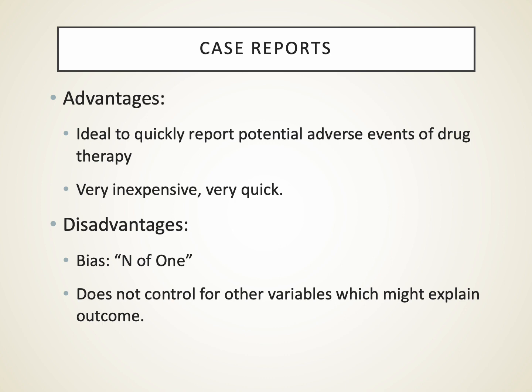One of the weakest kinds of publications are case reports. They play an important role, but basically a clinician reports on something unusual they observe. They're very quick and inexpensive, but very biased — you can't really control for whether the outcome you're seeing is related to any intervention. There's nothing to control for, so we call that a bias or an N of 1. In clinical practice we can experience the same bias — for example, if one patient on a statin drug has a rare event like rhabdomyolysis, you may let that one case report overly influence your future decision-making.